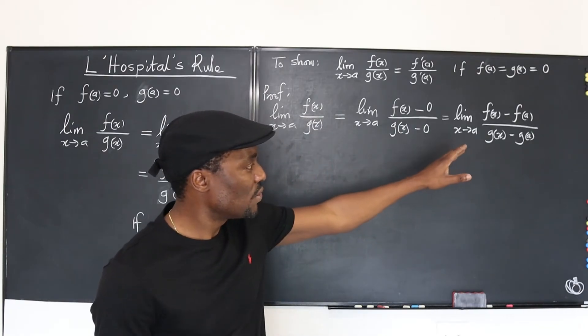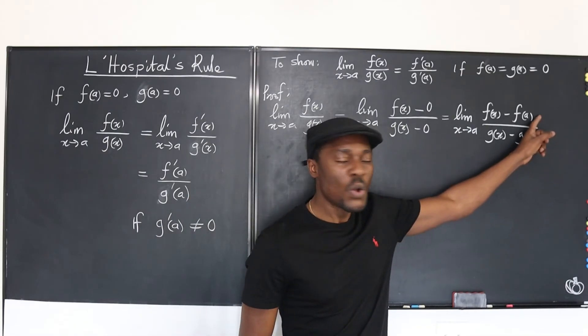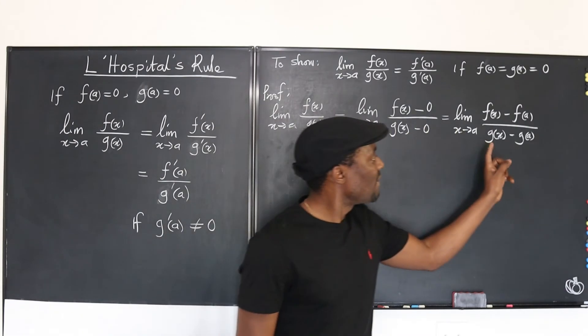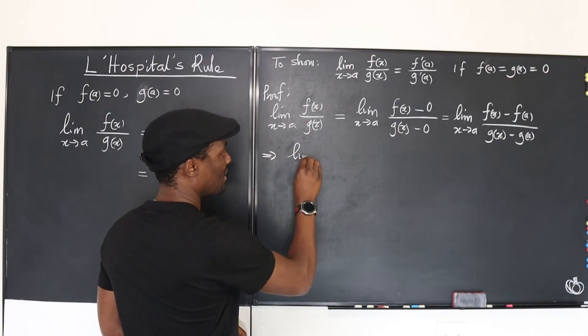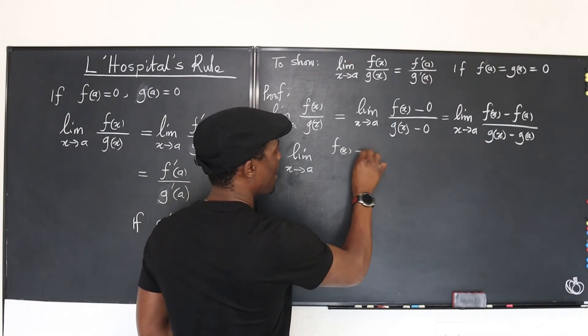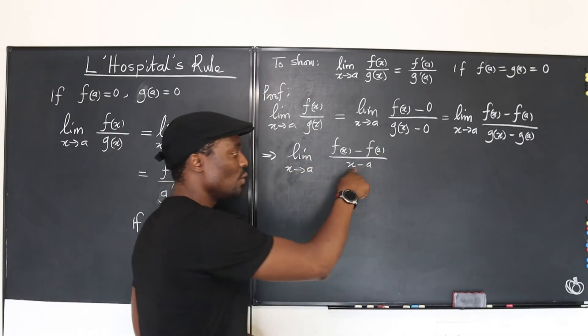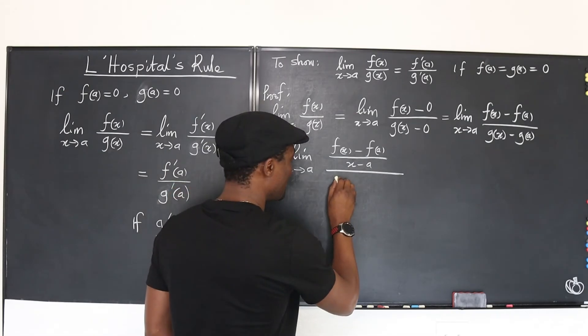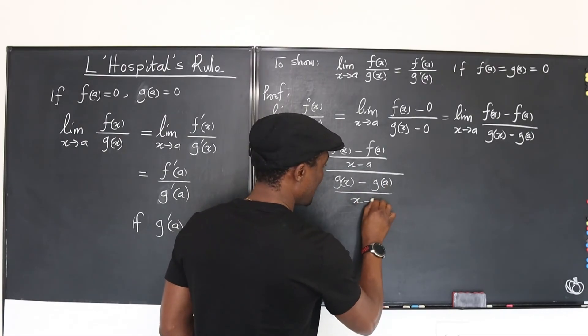So now what else can I do to this to take it to a familiar level? I am going to multiply the top or divide the top by x minus a. And I'm going to divide the denominator also by x minus a. So look at this. So this is going to be the same thing as the limit as x goes to a of f of x minus f of a divided by x minus a. Well, what you do to the top, you must do to the bottom too. So I'm going to divide the bottom too by x minus a so it doesn't change anything. And that's going to be g of x minus g of a over x minus a.